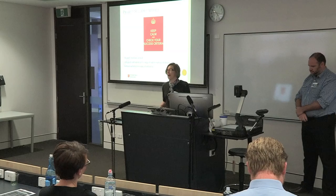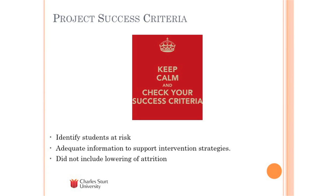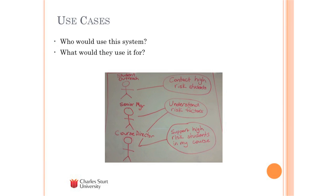We defined upfront how we were going to measure success. It was really important we did this because we weren't going to have time for detailed requirements gathering. The key to success was identifying the students most at risk and providing adequate information for the support team to put together their intervention strategies. We deliberately didn't include actual lowering of attrition for CSU as a success criterion, because although that was a desired outcome it was outside the control of the project team. We also had a high-level look at use cases — talking to the student outreach team as our predominant users, as well as senior managers and faculty representatives for a broader understanding.